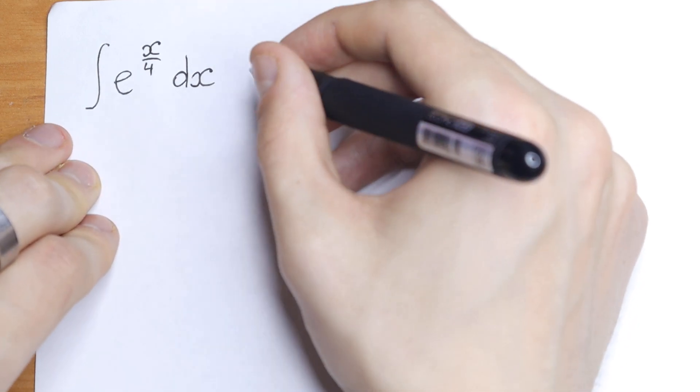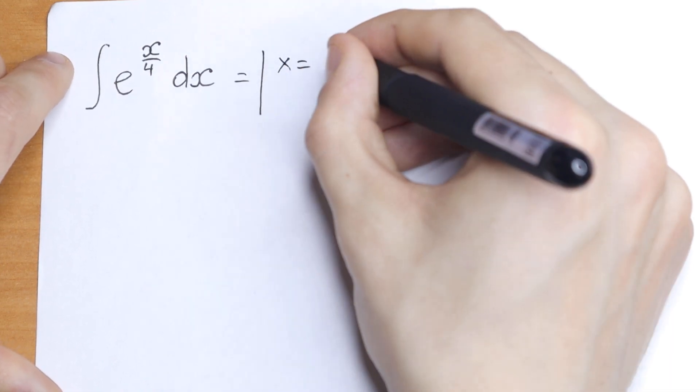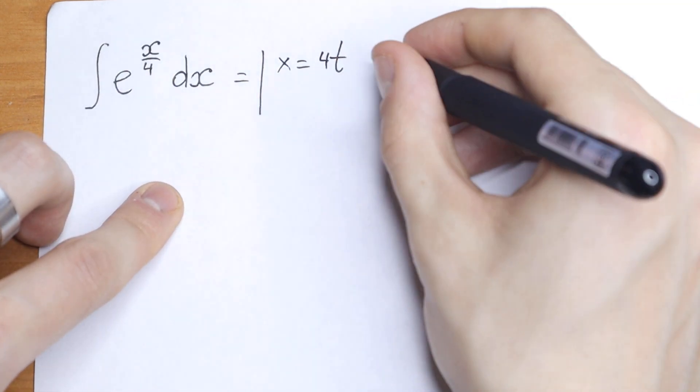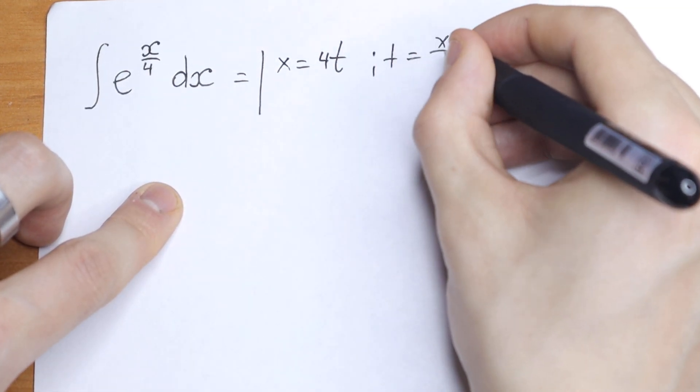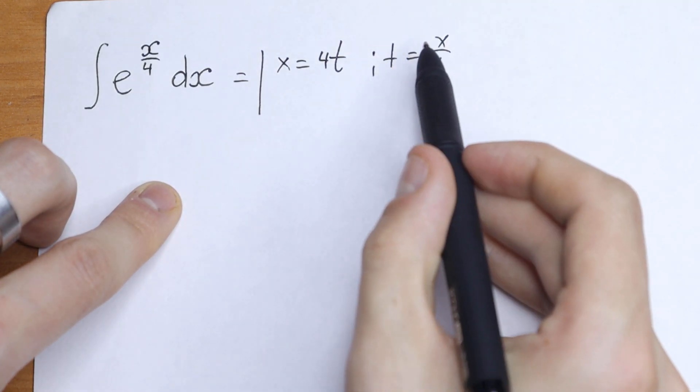Let's take a look at how we can solve it. First of all, we can write x equal to 4t. If we have t equal to x over 4 as our substitution, we multiply by 4 and we have x equal to 4t.